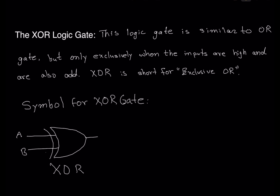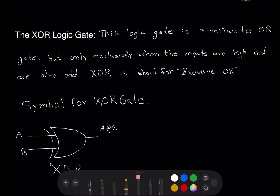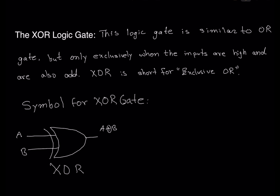So that will have input A and input B, and the expression will be A plus B surrounded by a circle — that means exclusively OR gate. So that is the symbol: A and B are inputs, and A exclusively-OR B is our output, which you can call Y or any letter you want. That's the symbol for the XOR gate.